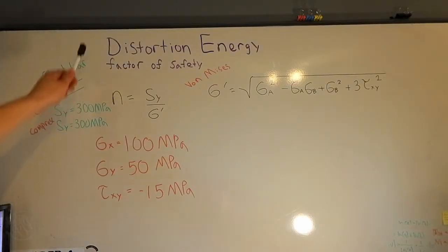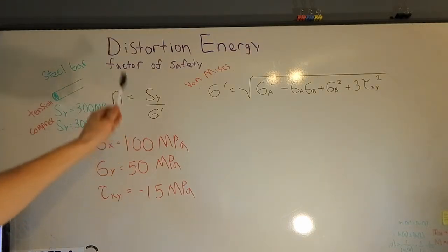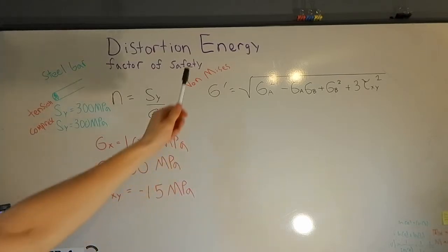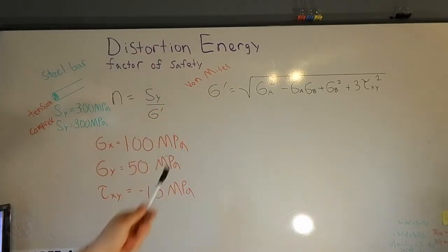Alright, so because we're using distortion energy theorem, we can say that the factor of safety is equal to the minimum yield strength divided by the von Mises stress. And here is our equation that we're going to use to find the von Mises stress.